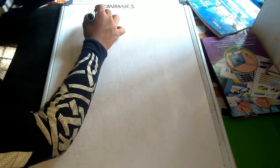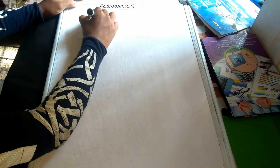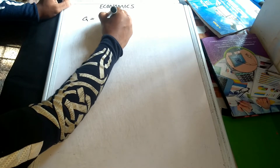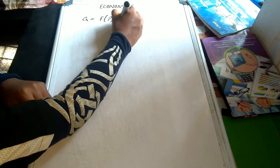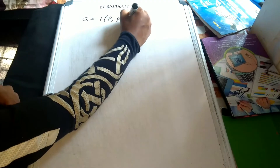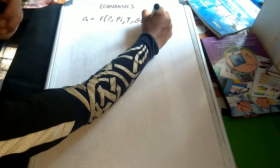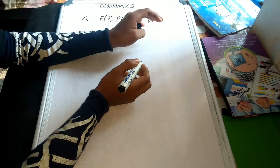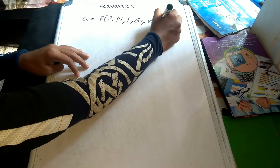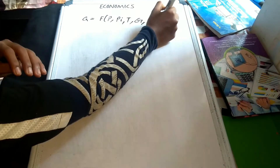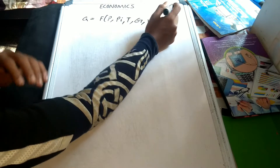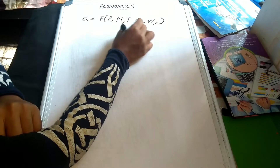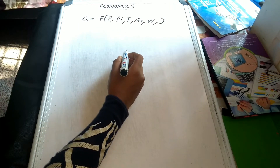We are talking about supply and demand — we call it a mathematical item and we call it QC functions. So price is the factor, then price input, then technology, then government, then weather — we call it supply, and we call it other factors.